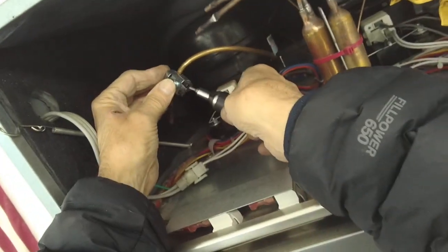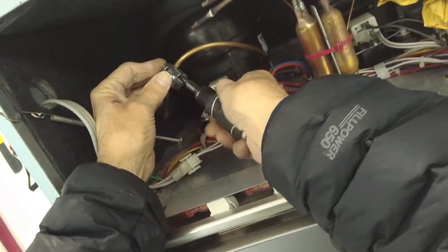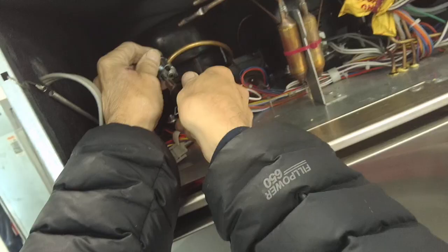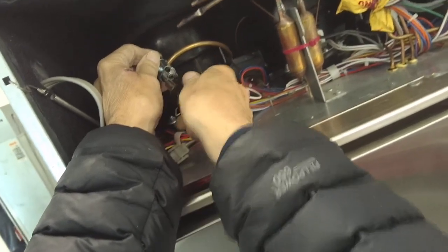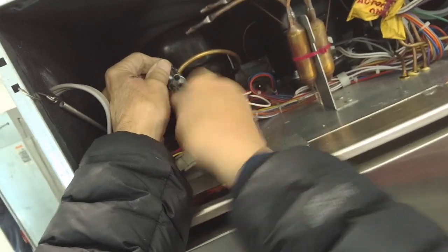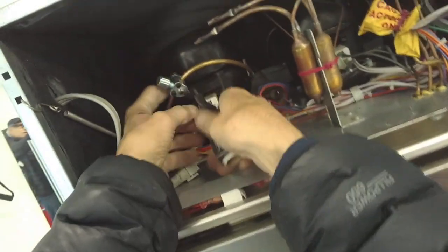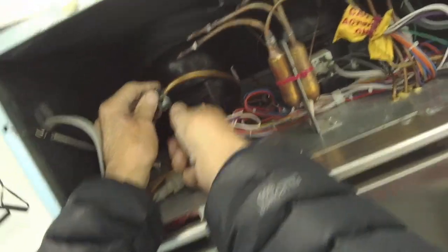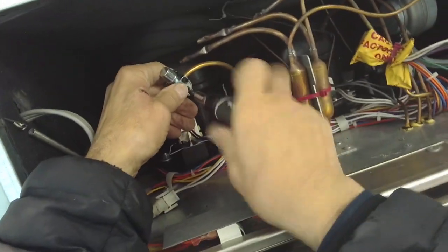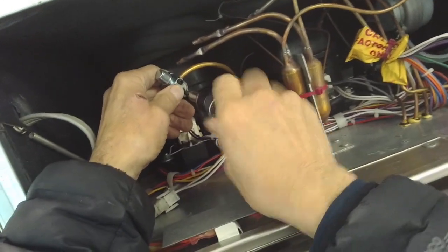Tighten up finger tight, take your tool. I use this little ratchet here. This is just a temporary installation. Once we take all the freon out, we will take this off.